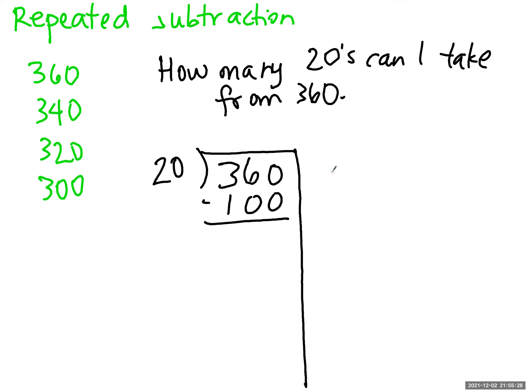How many times was that? 20, 40, 60, 80, 100. 1, 2, 3, 4, 5. 5 times 20 is 100.